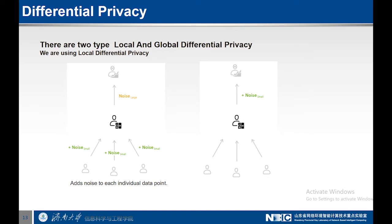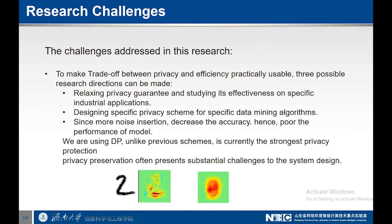For our research, we are using local level differential privacy, which is applied on the client side. The challenges addressed in this research include relaxing the privacy guarantee and studying its effectiveness on specific industrial applications, and designing specific privacy schemes for specific data mining algorithms. Since more noise insertion decreases accuracy and hence model performance, we use differential privacy, which is currently the strongest privacy protection. Privacy preserving often presents substantial challenges to system design.